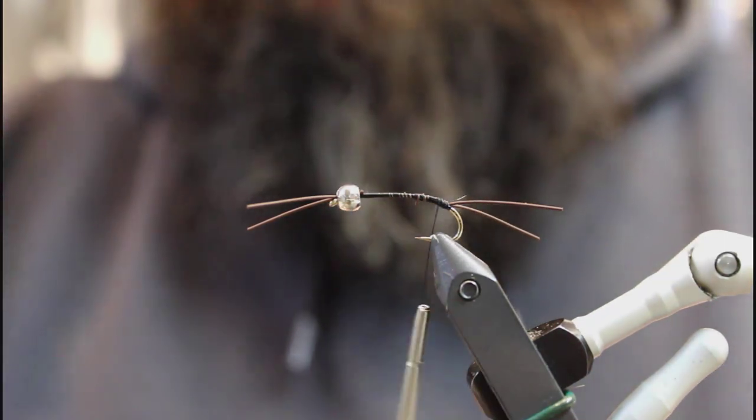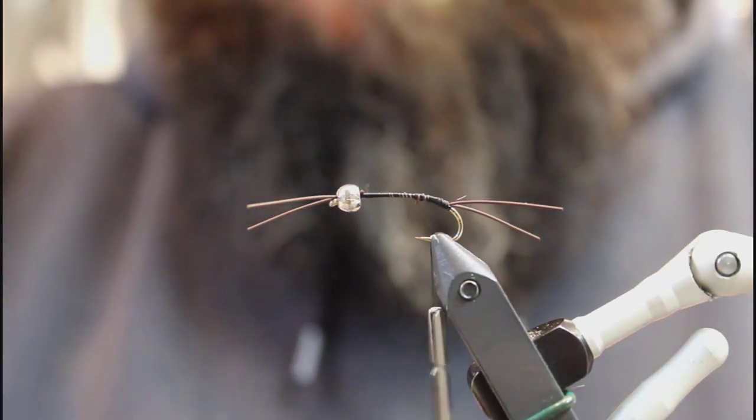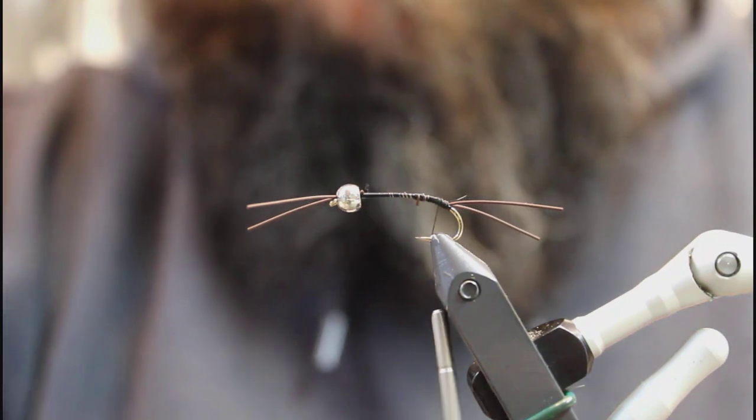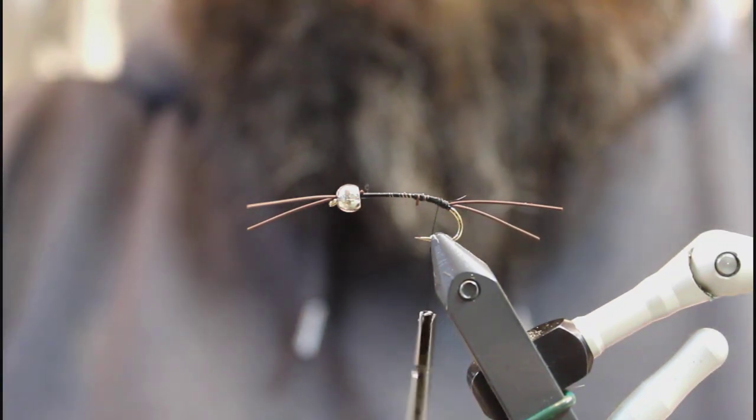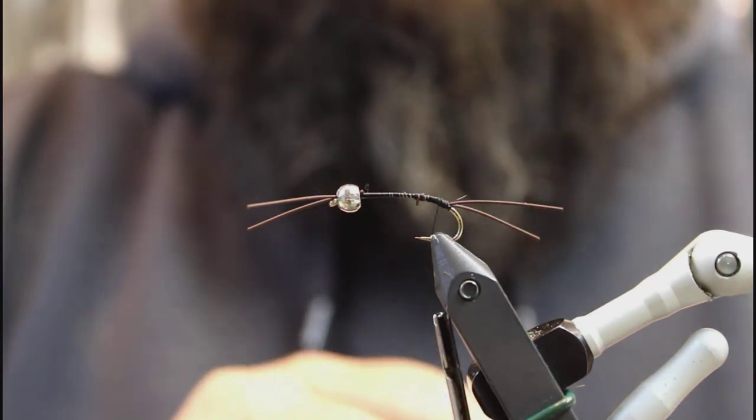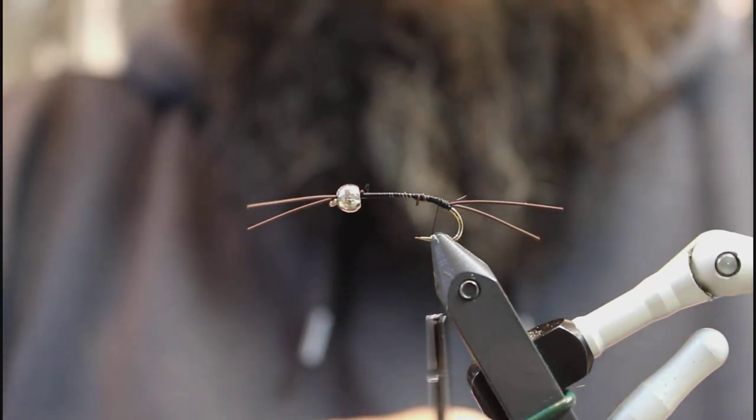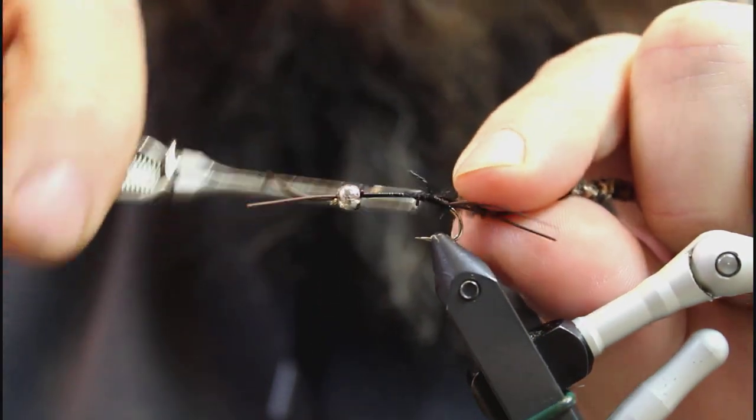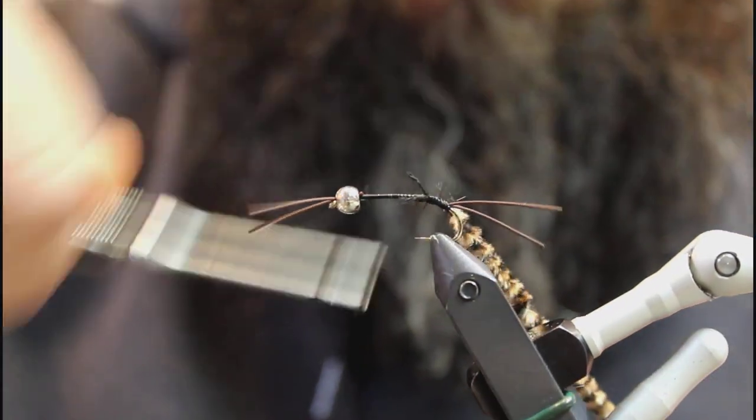Next thing I'm going to do is take some of this medium black and coffee variegated chenille. We'll strip just a little bit of the end of this off here so you've got something to tie down so it lays on there nice and flat. Get that tied in.